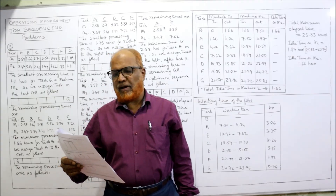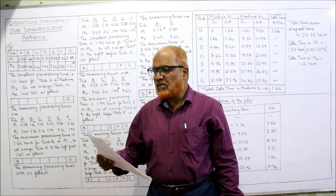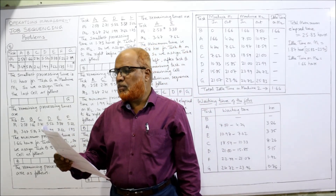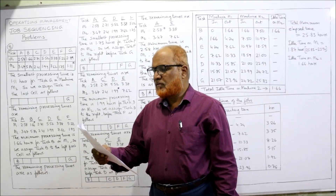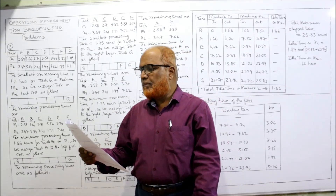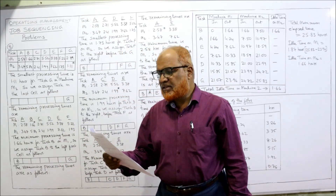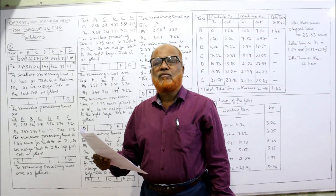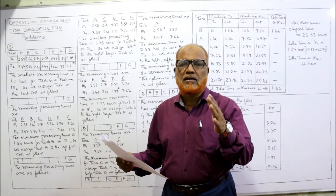Now see problem number five. A company is faced with seven tasks that have to be processed through two machines. Find the optimal sequence of the jobs to process, and find the total completion time, idle time of machines, and waiting time of the jobs. In previous problems we calculated the minimum total elapsed time and idle time of machines.